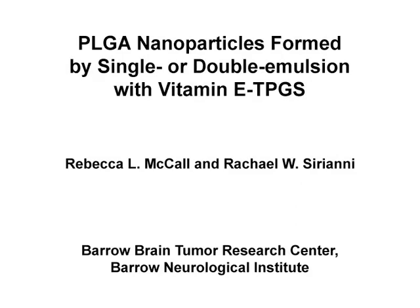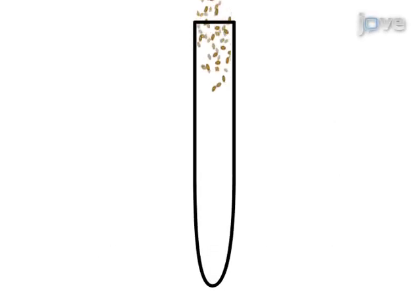The overall goal of this procedure is to form polymer nanoparticles of tunable size. This is accomplished by first dissolving polymer into an organic solvent and adding drug or fluorescent encapsulant.